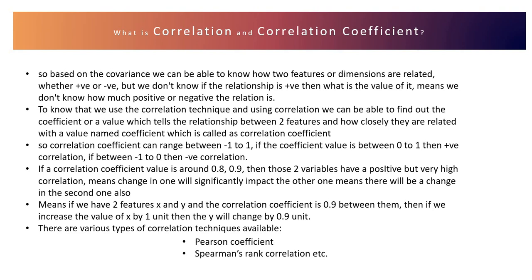If the coefficient value is between zero to one, then we have a positive correlation. If the value is between minus one to zero, then we have a negative correlation. For example, if a correlation coefficient value is around 0.8 or 0.9, those two variables have a positive but very high correlation — meaning a unit change in x will significantly impact y. If we change x by one unit, y will change by 0.9 units, if the correlation coefficient is plus 0.9.